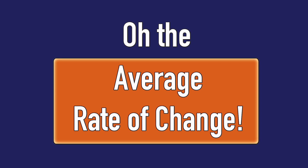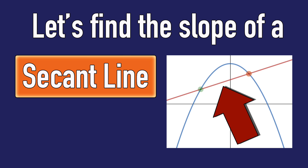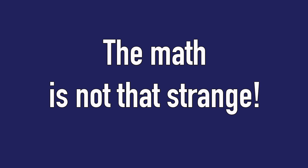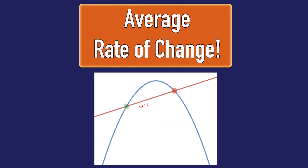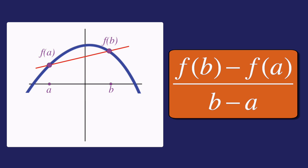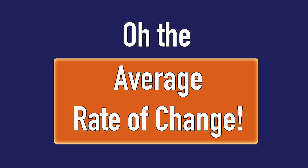Let's find the slope of the secant line. The math is not that strange — it's the average rate of change. f(b) minus f(a) over b minus a. It's the average rate of change.